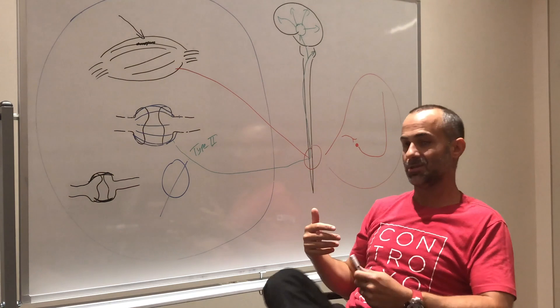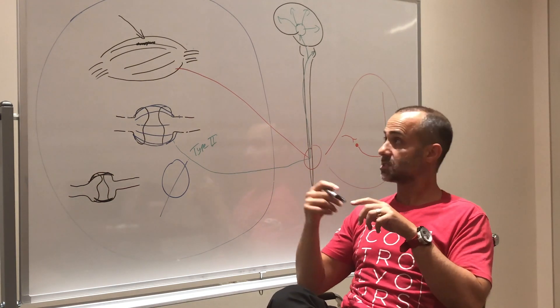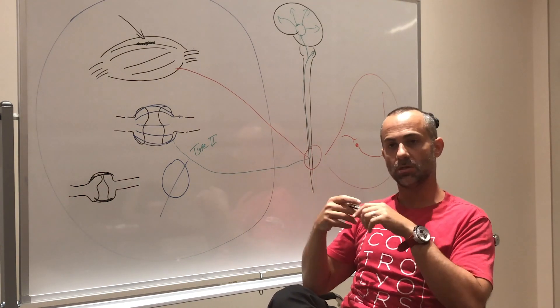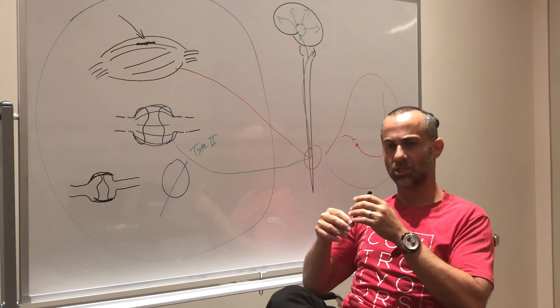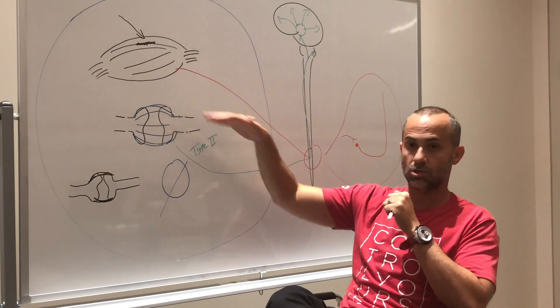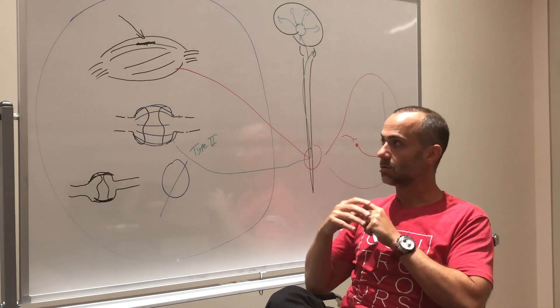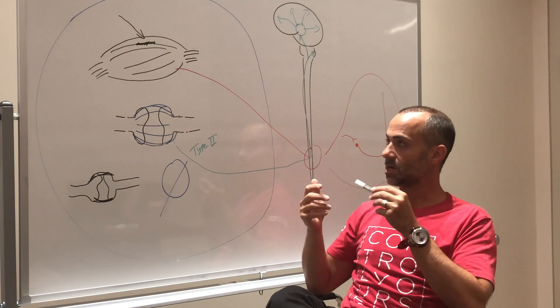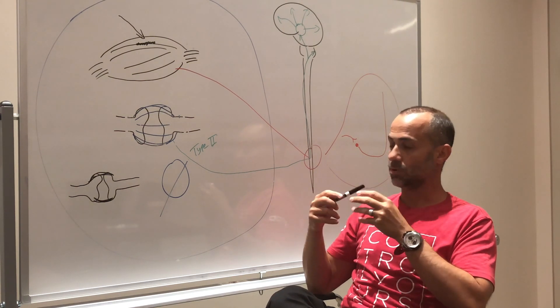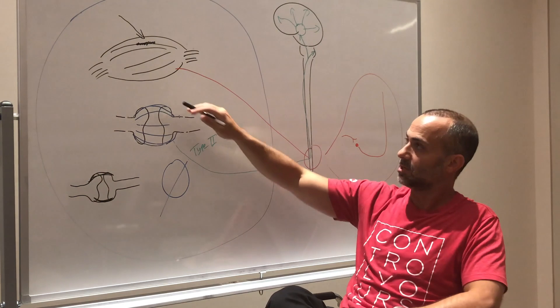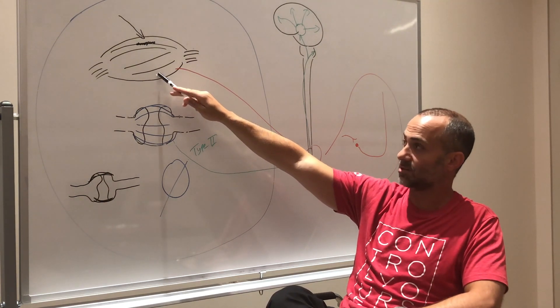So therapists have to be able to differentiate: Is this mechanical tension caused by disorganization of tissue, or is this neurologically tight? Once again, in the FRS system—Functional Range Systems—we specifically take time to teach the therapist how to tell the difference.